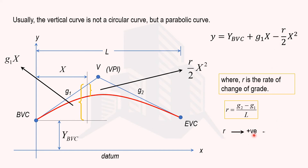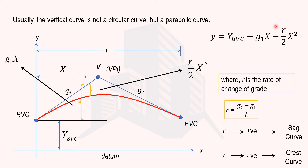In a sag curve, r is positive because G2 is positive (rising gradient) and G1 is negative (falling gradient), so negative times negative gives positive, making the overall r value positive. In a crest curve, r is negative. So the equation y = y_BVC + G1·x + (r/2)·x² applies for both — with r being positive for sag and negative for crest. This completes the derivation of the equation for the vertical curve.